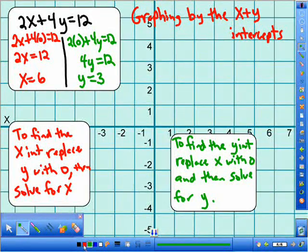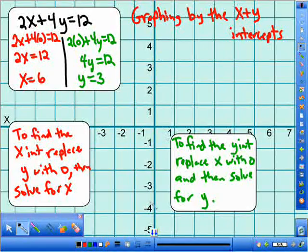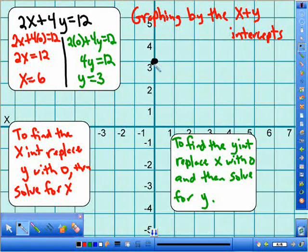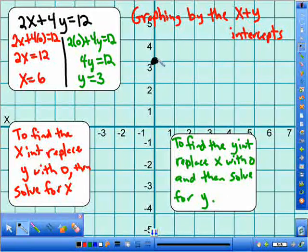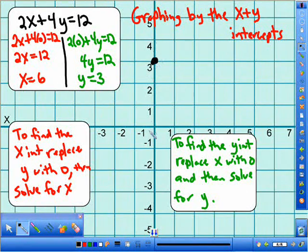So all we have to do is plot the points. One point is on the Y axis at 3. So there's my point. My Y is equal to 3. That's my Y intercept. So it's right there.